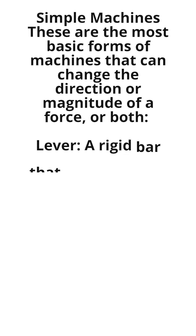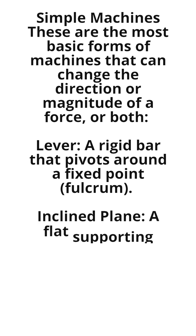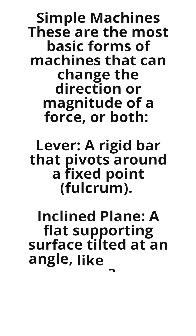Here we need to understand some of the basic types of simple machines. For example, the lever — a rigid board that pivots around a fixed point — and the inclined plane — a flat supporting surface tilted at an angle, like a ramp. These are some of the simple machines we use to do work in an easier way.